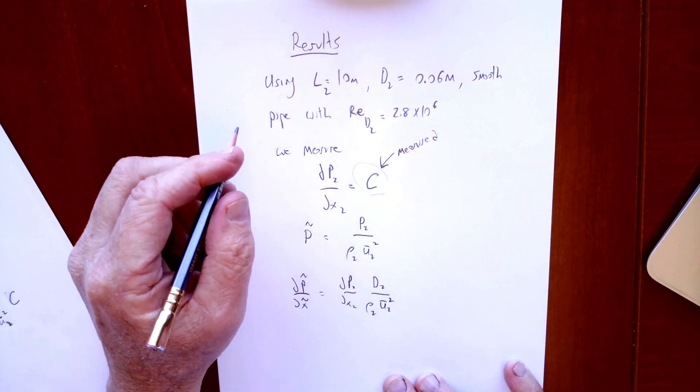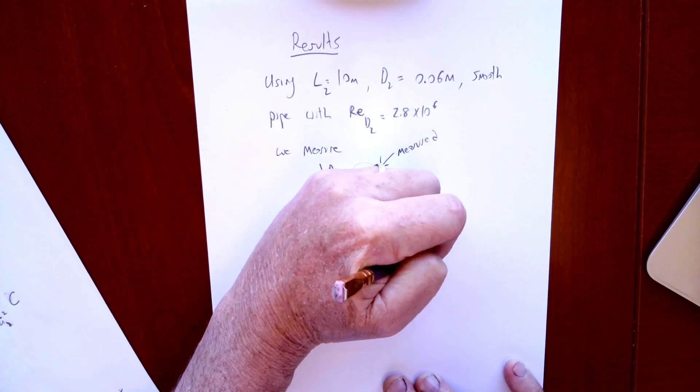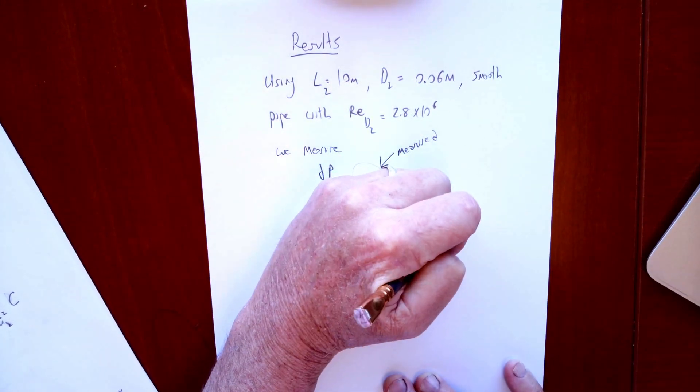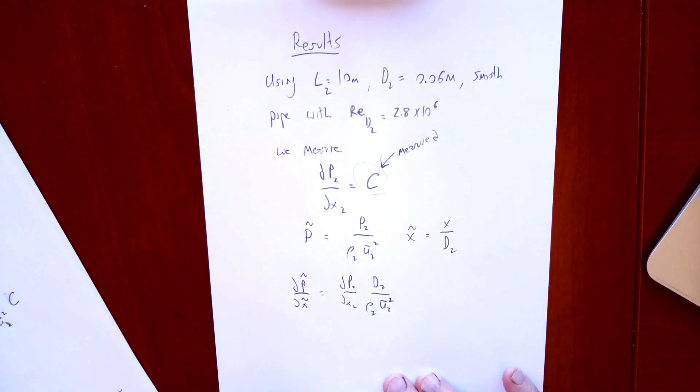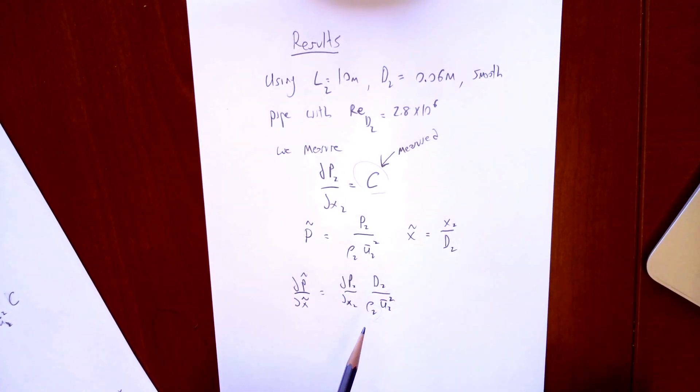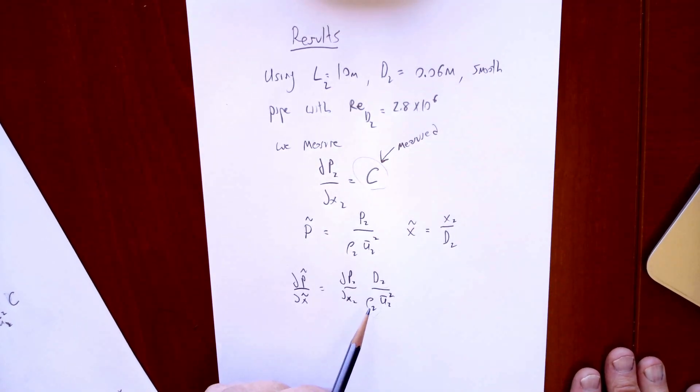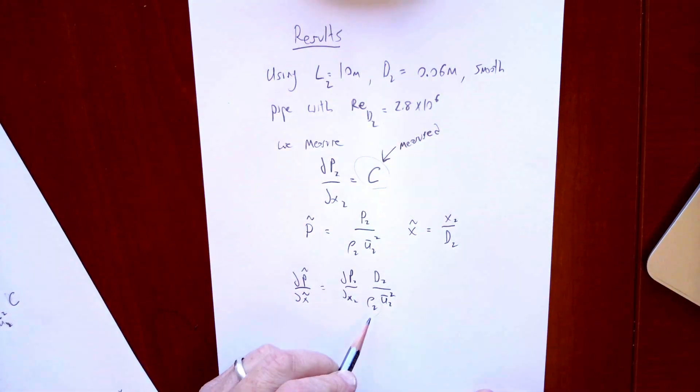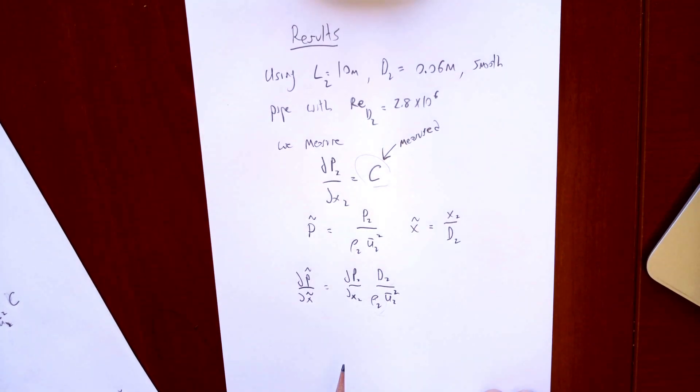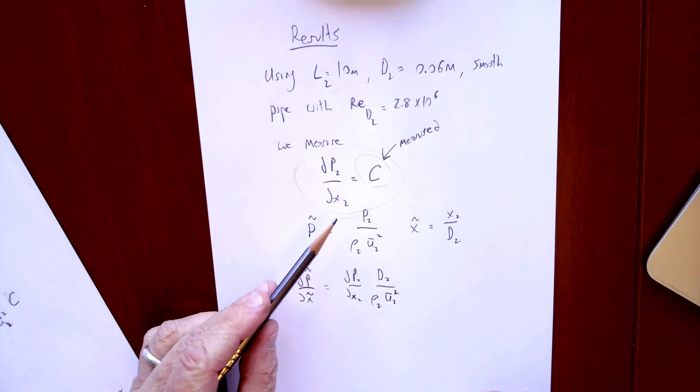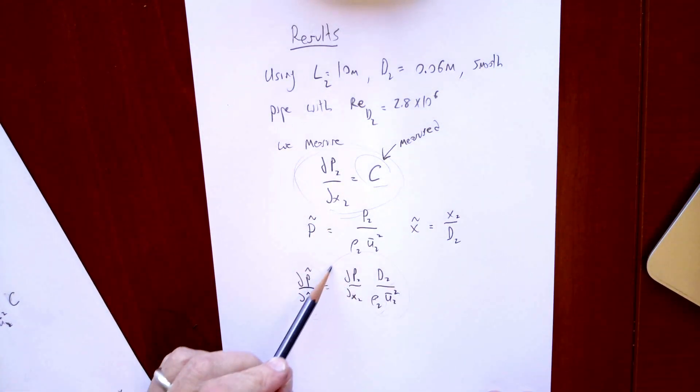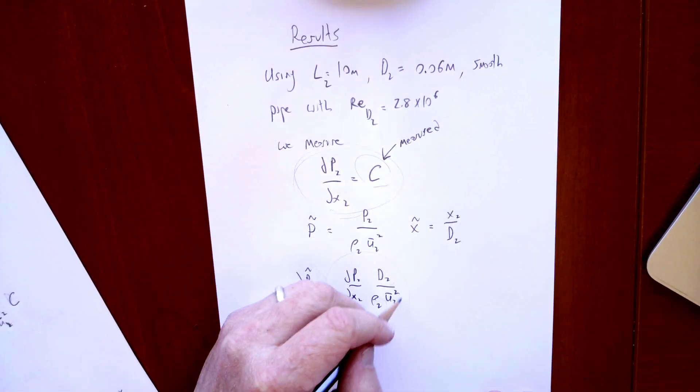When I go from my dimensionless world, I also want to make sure I know what X is. X is X over D2 in this case, so that D2 comes up here, ρU squared here. Notice we have a ρ2 here because we're changing fluids from water to air, so we have to make sure it's not the same density as in the actual case we're trying to simulate. That's how we would relate what we measured in real physical space to the dimensionless answer.